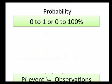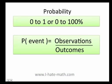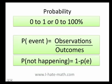Now let's remember the basics of probability. Probability can never be negative and it goes from 0 to 100. Also, the probability of an event is the number of observations divided by the number of outcomes. And the probability of an event not happening is 1 minus the probability of the event happening.